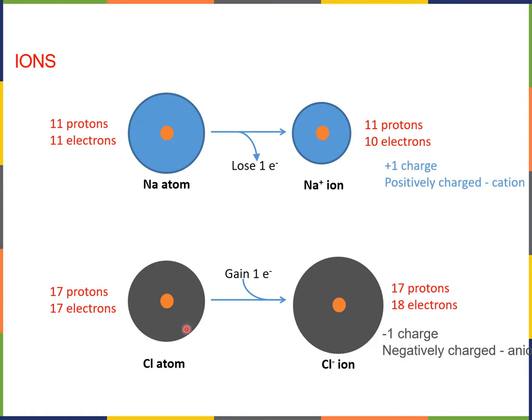Similarly with a chlorine atom, except a chlorine atom is more likely to gain than to lose an electron. So if a chlorine atom gains one electron, now it has one more electron than it has protons for a net negative one charge, which gives us a negatively charged anion.